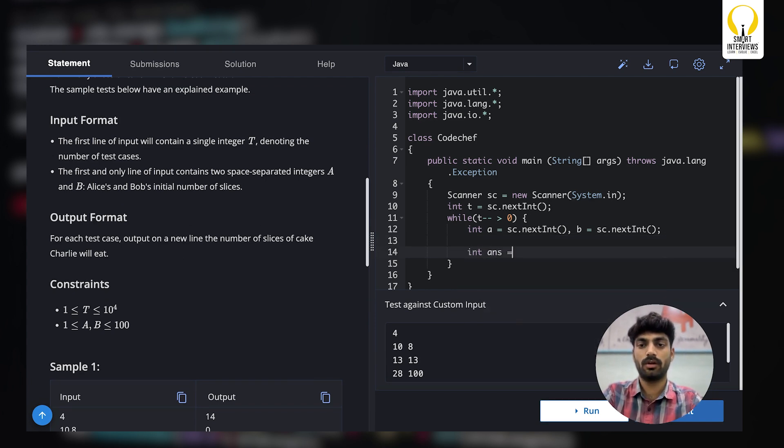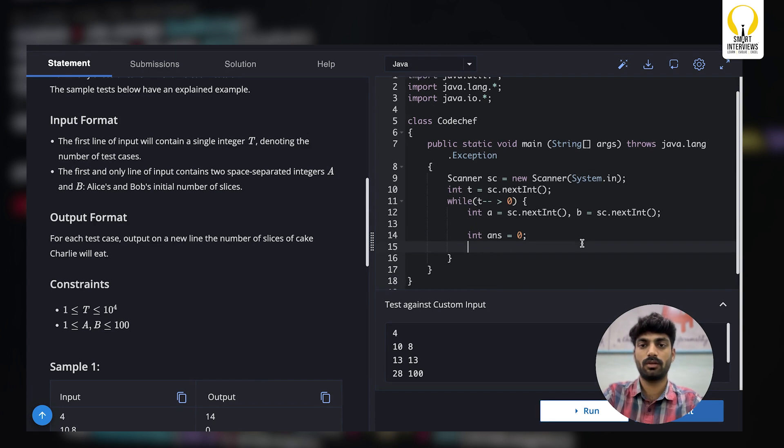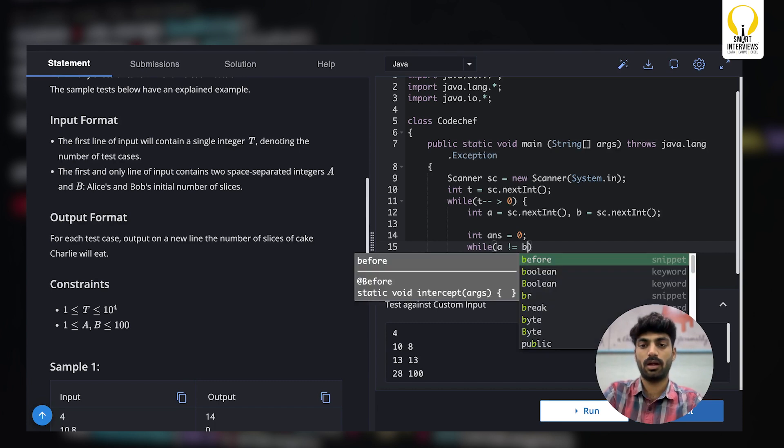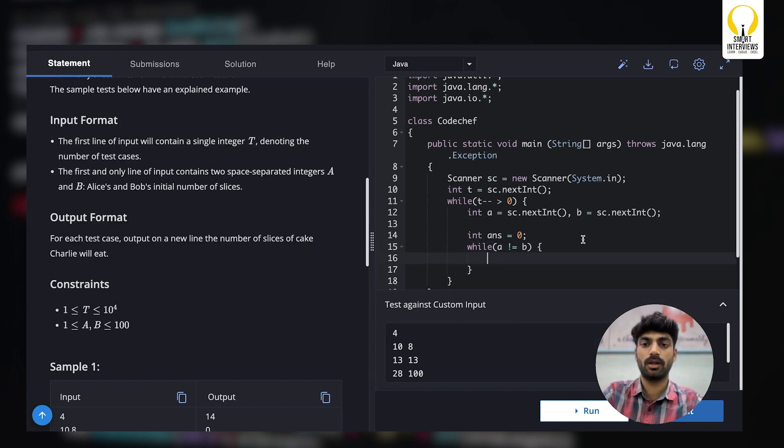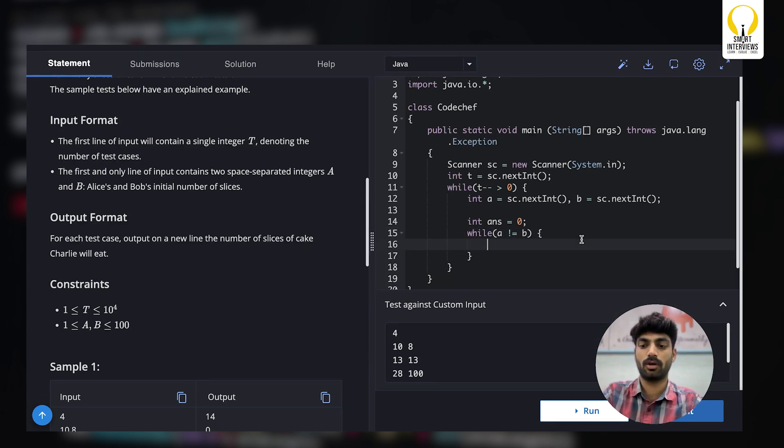Then to store our result we'll store it in this answer variable. If they are unhappy then we'll try to make them happy by making A and B equal. Once these two are equal that means no one is unhappy, we can stop there.